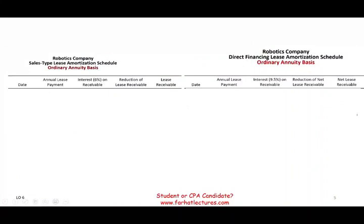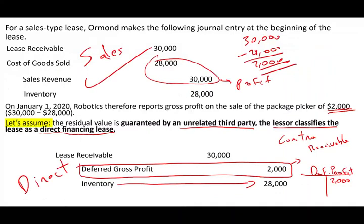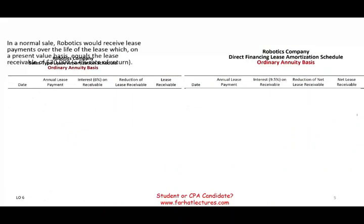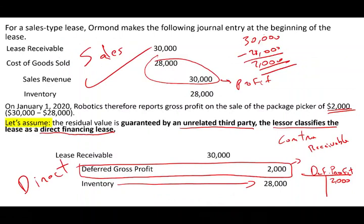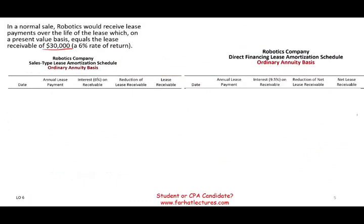What entry do we make if this is now a direct financing lease? We still have a receivable of $30,000. But we no longer have a sale. We credit inventory for $28,000. The profit of $2,000 is not booked now — it's called 'deferred gross profit,' which is a contra receivable. So we start with a credit balance of $2,000 in the deferred gross profit account. This $2,000 that was recognized as profit under the sales type lease is now being deferred and will be earned over the life of three years, but not on a straight-line basis.